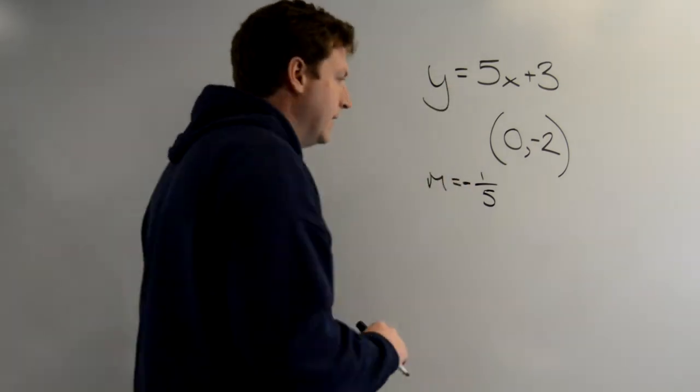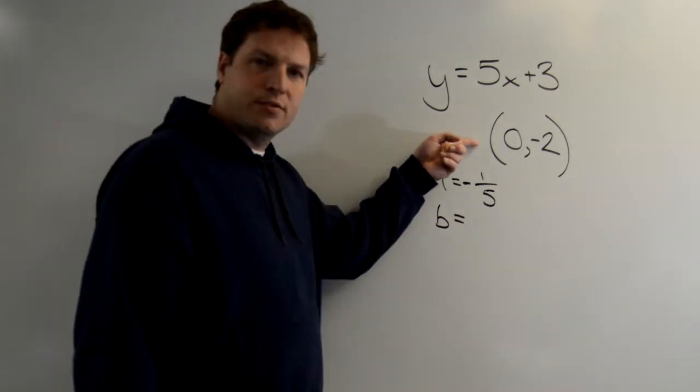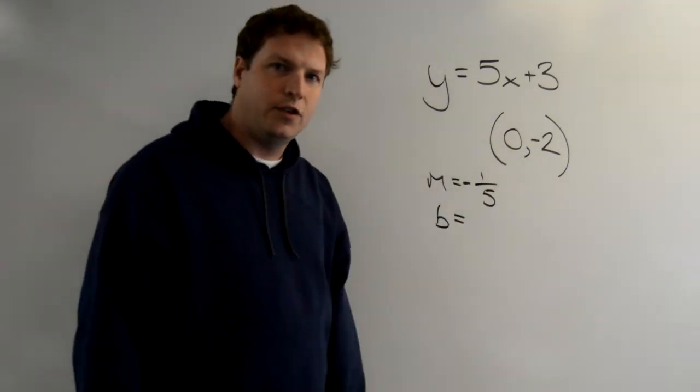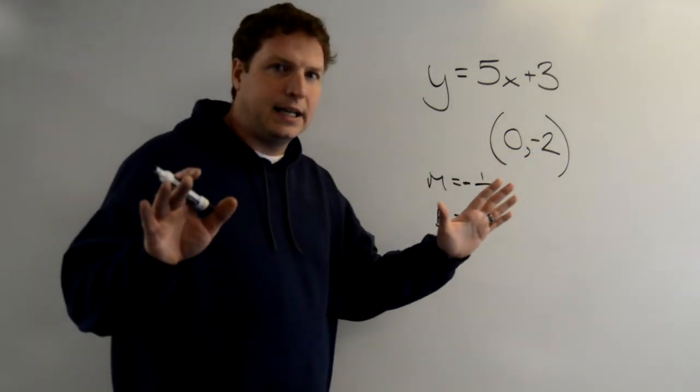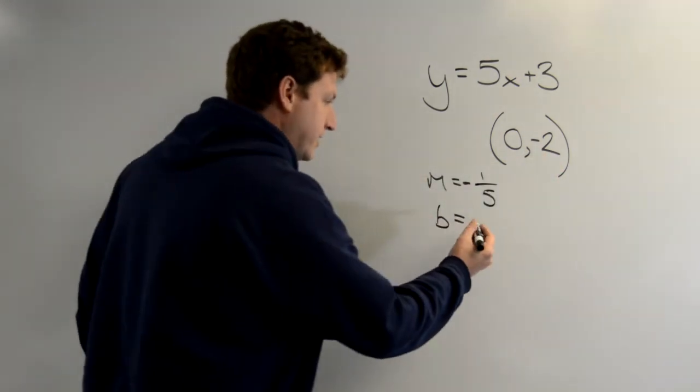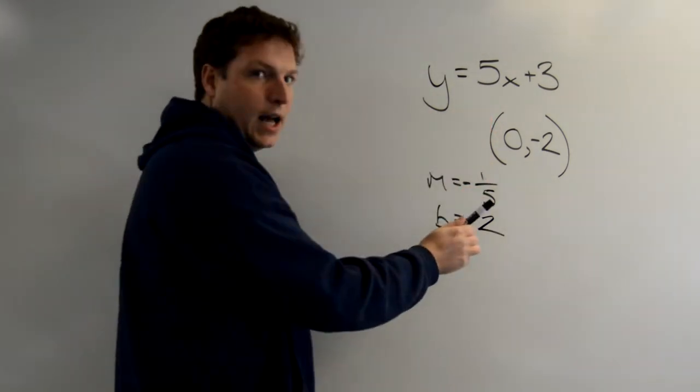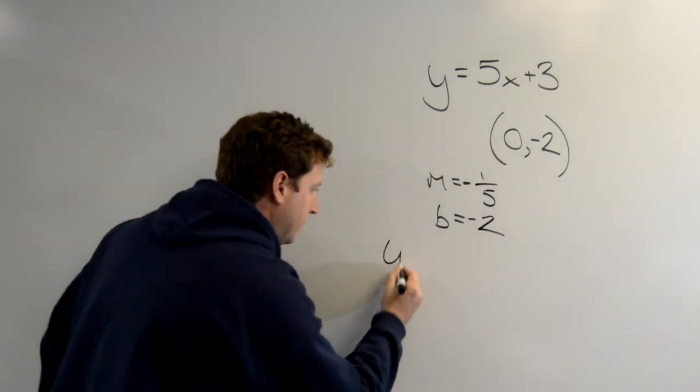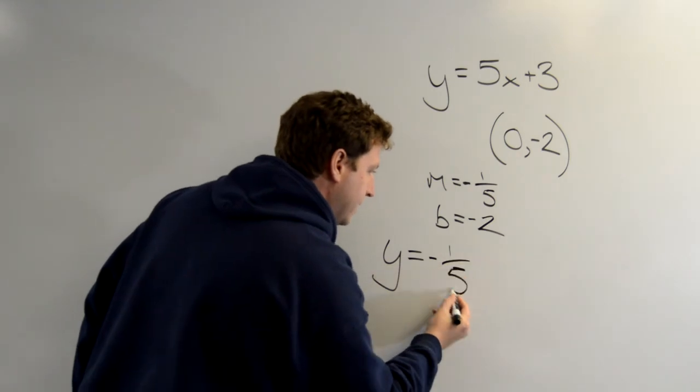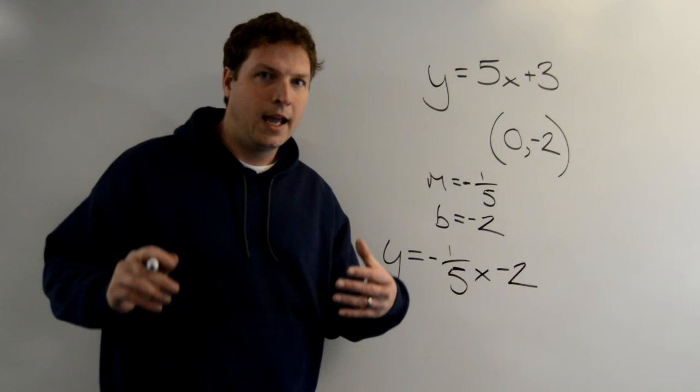The second step is that we need a y-intercept. Well, we know it passes through this point where x equals 0, y equals negative 2, which is about as easy as it gets. That means that negative 2 is our y-intercept. So an equation that's perpendicular to this line and passes through this point could be written as y equals negative 1/5x minus 2. Super easy.